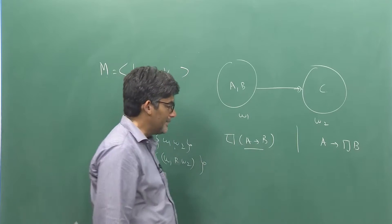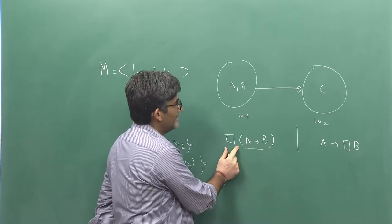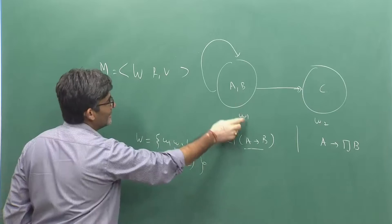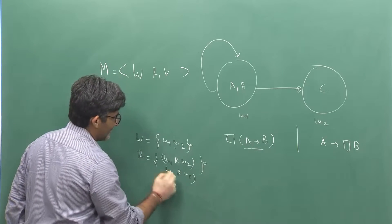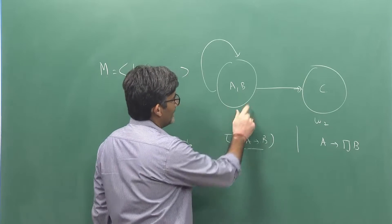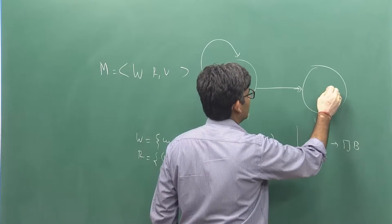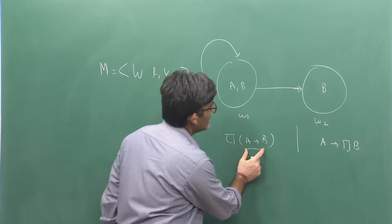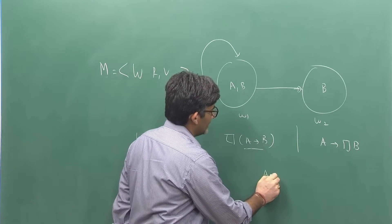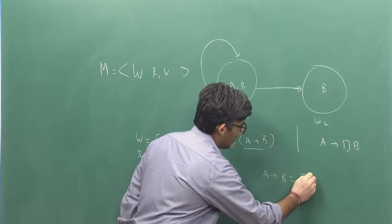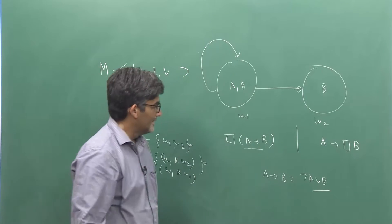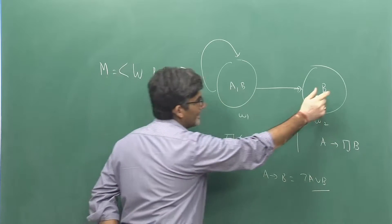We want to know when A implies B is considered to be necessarily true. In this accessibility relation, W1 is also accessible to itself. So necessity of A implies B means A implies B has to be true in all the worlds accessible from W1 — which are W1 itself and W2. A implies B is equivalent to not-A or B.